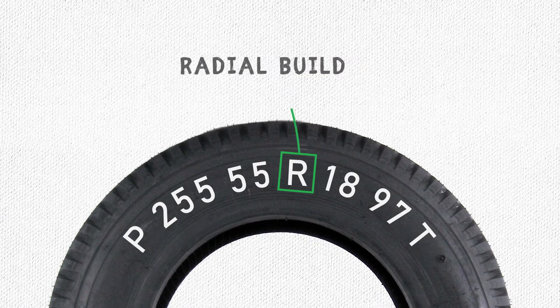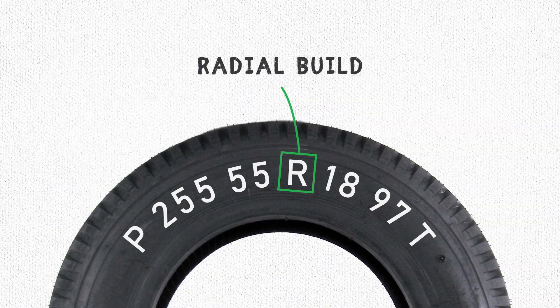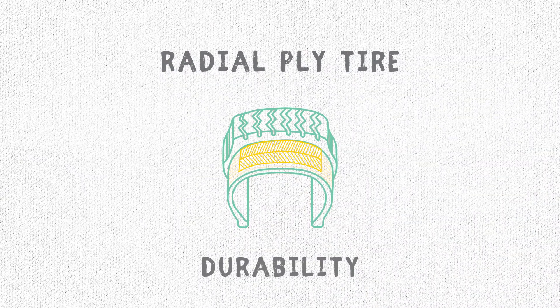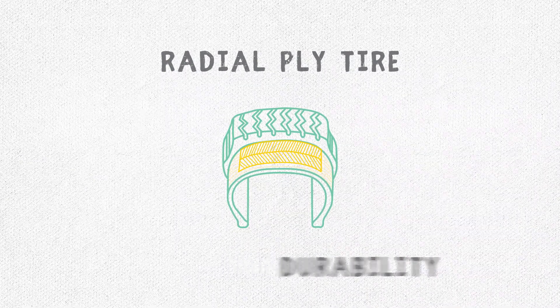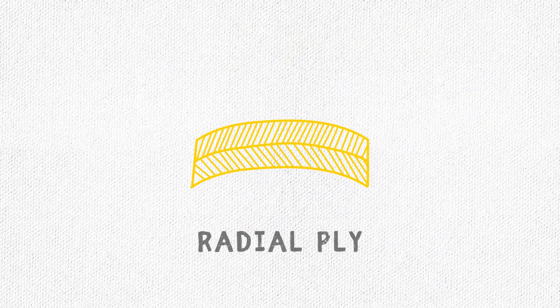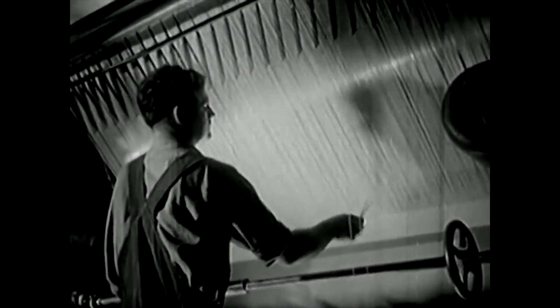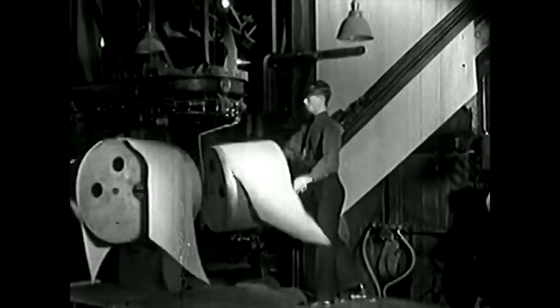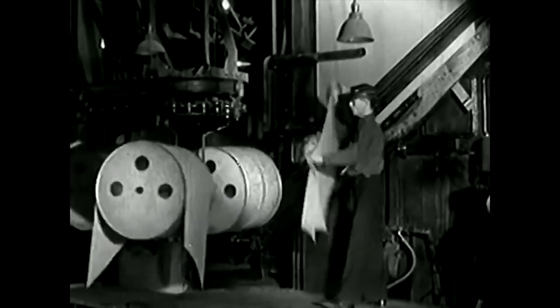The next letter signifies the construction of the tire. In this case, R means radial construction. Today, 98% of tire construction is radial, due to better grip, gas mileage, and durability. In radial tires, the plies are laid perpendicular to the direction of travel. Plies are a combination of polyester, fabric, and steel coated in rubber. The rubber used for this ply stock is compounded so that it possesses high anti-friction properties.